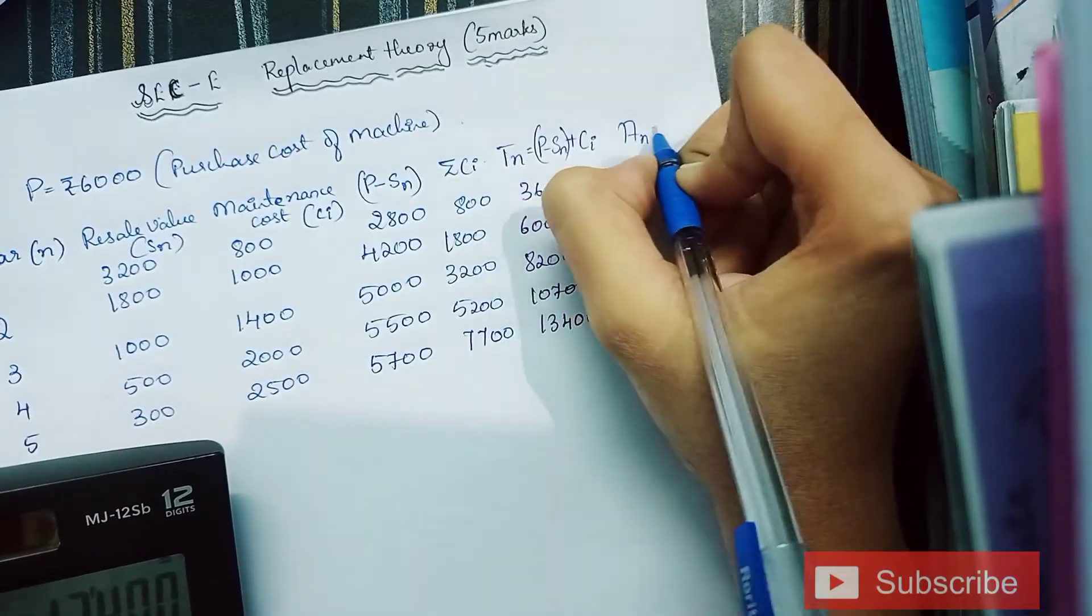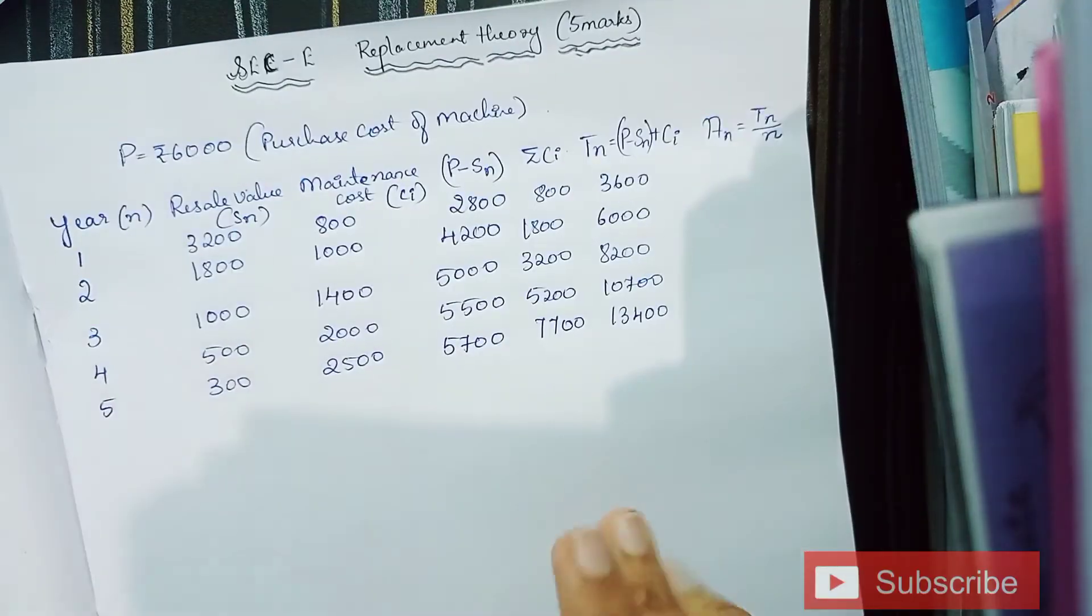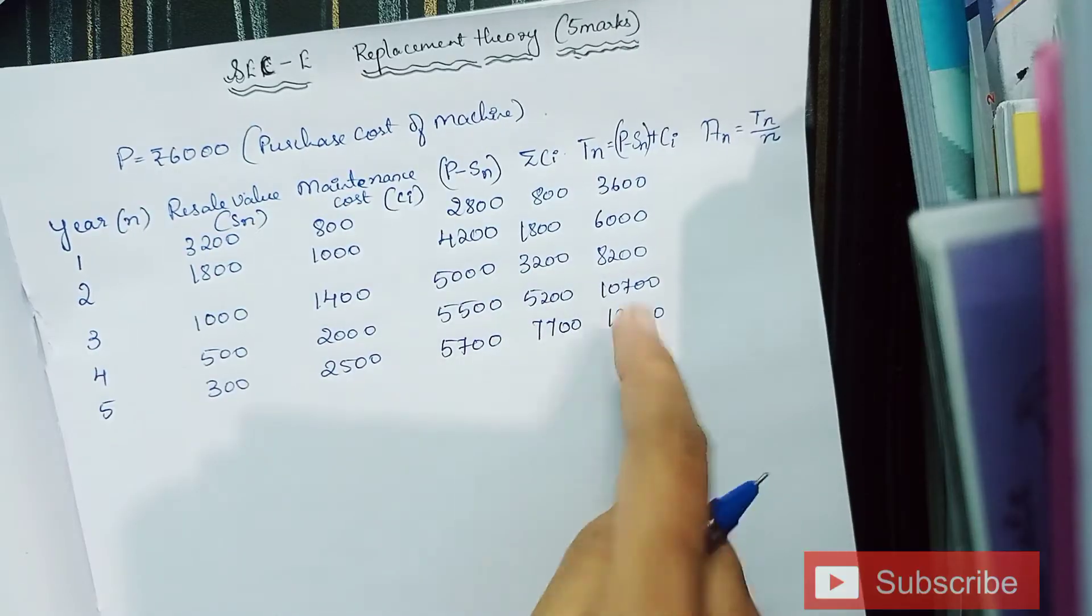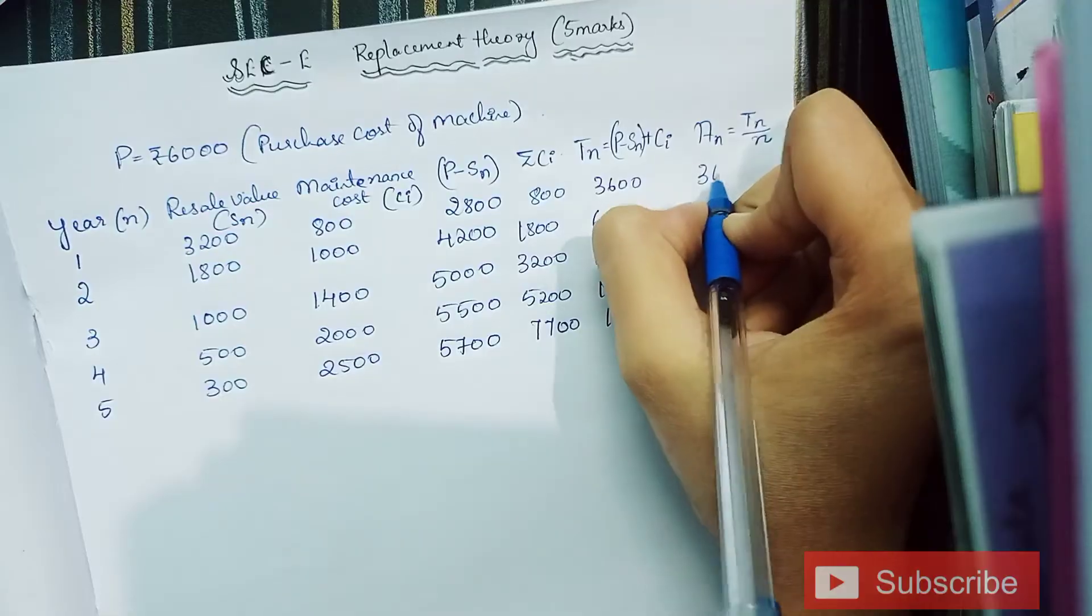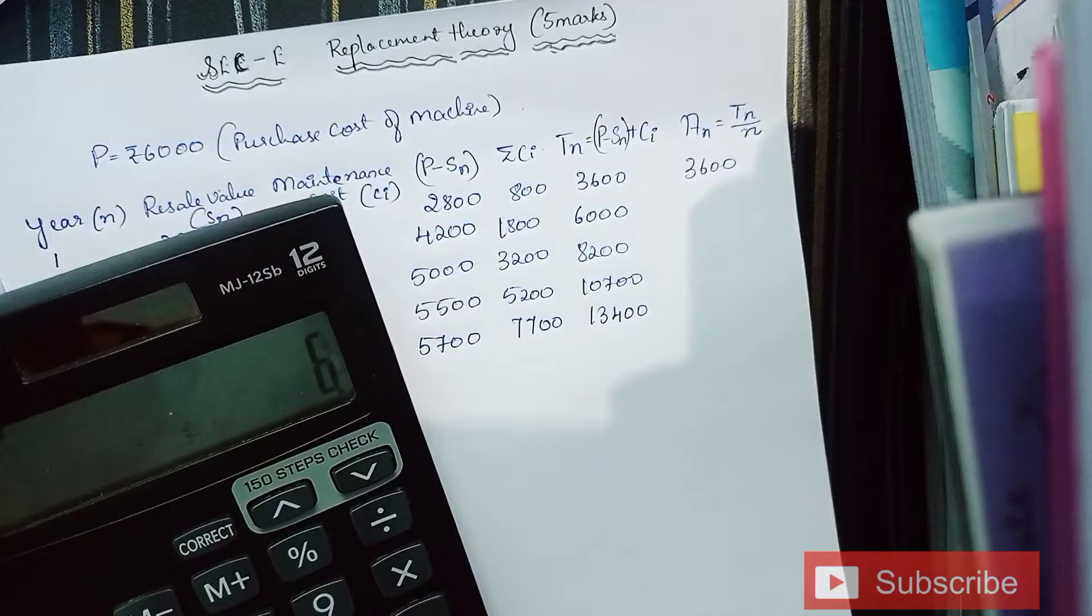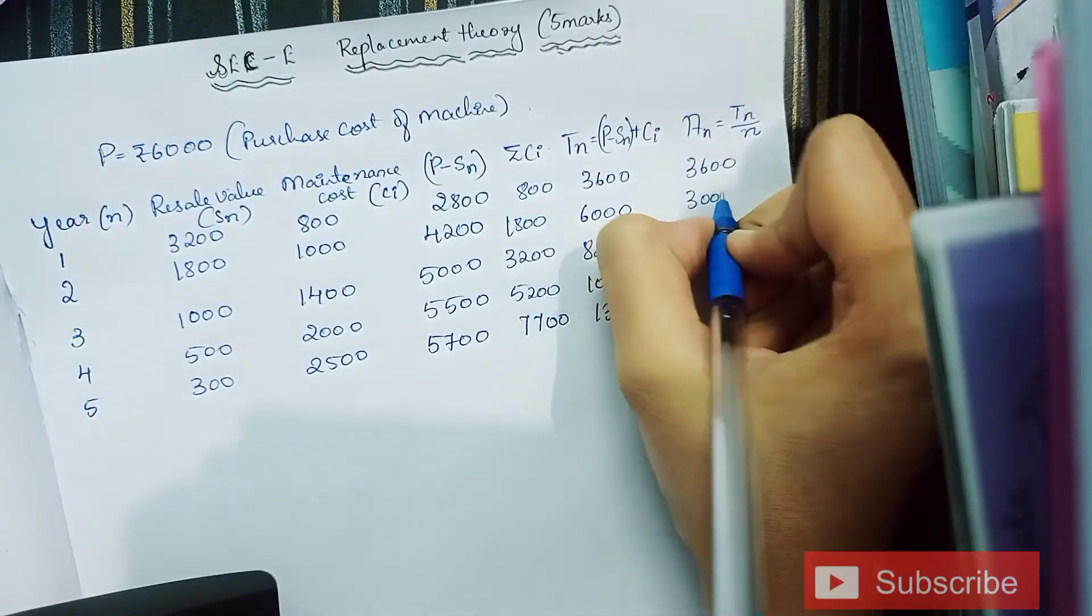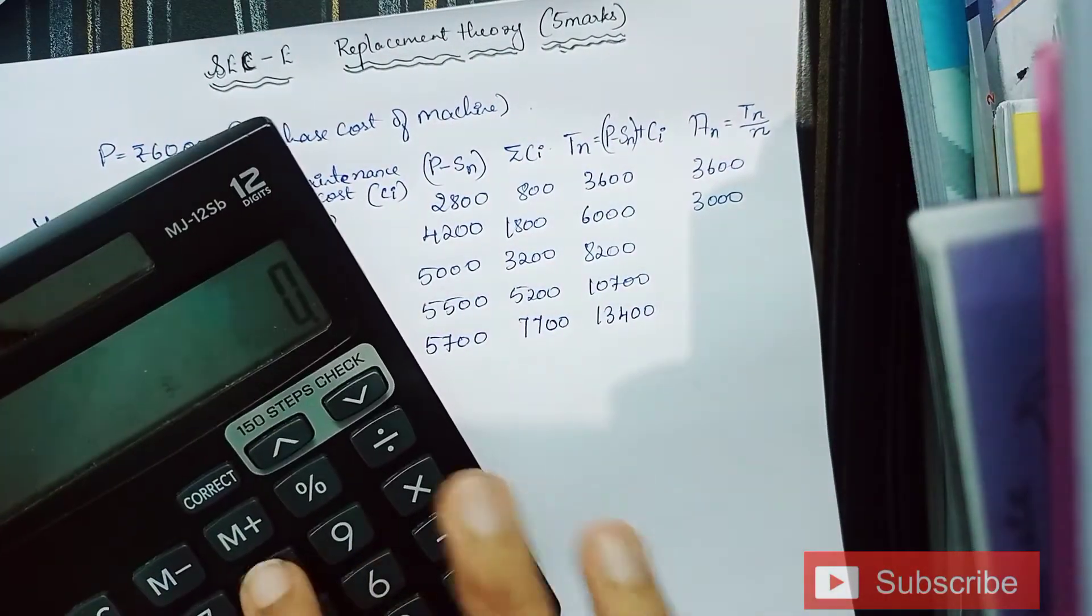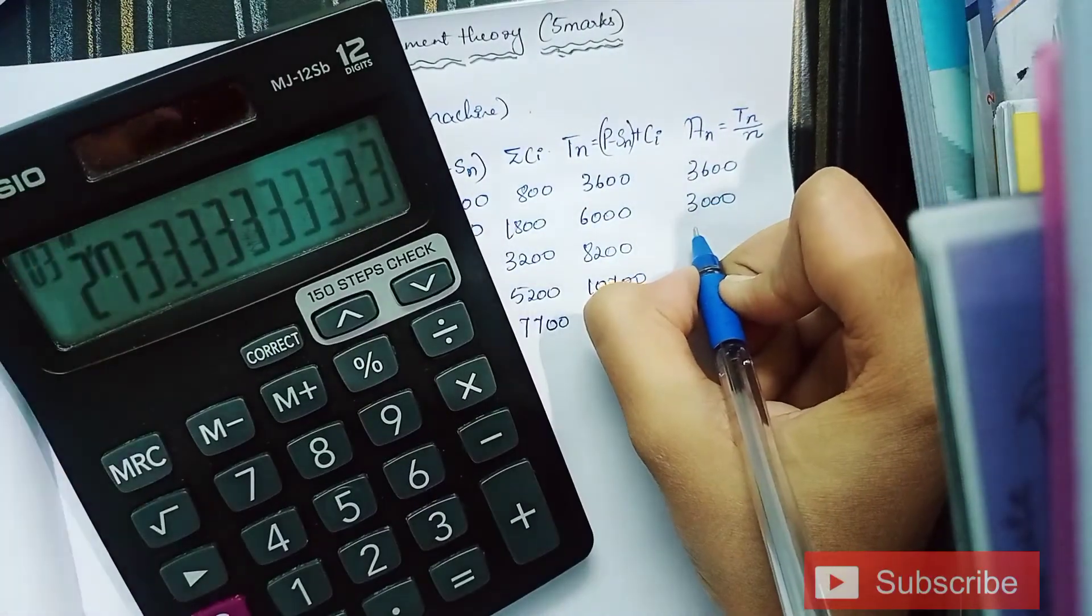Now the final column is AN, which is TN by n. We're going to divide the TN values with their respective n values. So first is 3600 divided by 1 which remains as 3600. 6000 divided by 2 is 3000. Next is 8200 divided by 3 which gives 2733.33.